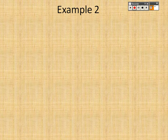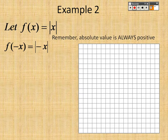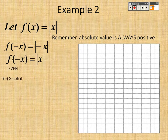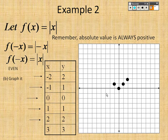Example two: the absolute value of x. Remember, absolute value is always positive, so we can tell it's even because if you plug in a negative it still gives a positive. When you graph it, the points are (0,0), (-2, 2), (2, 2) — they're all there.